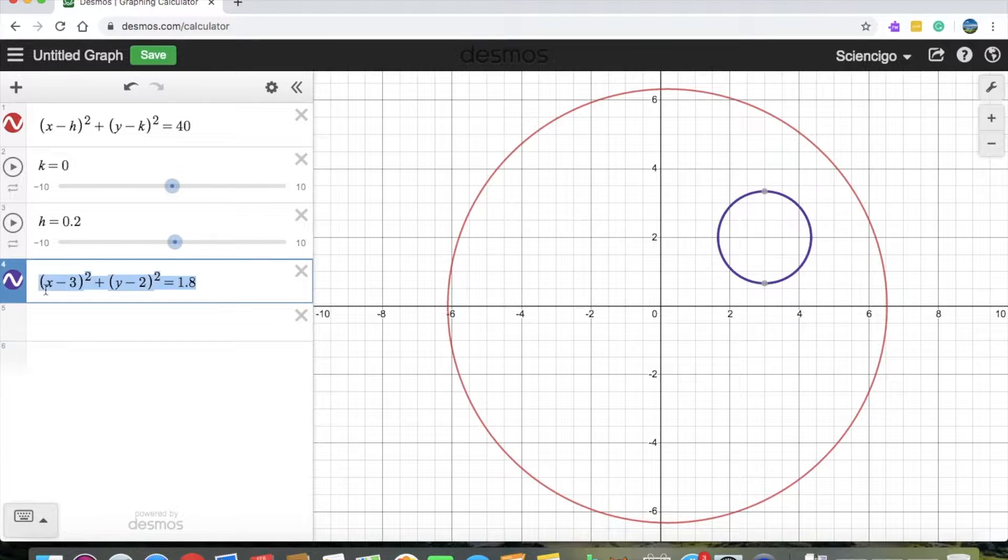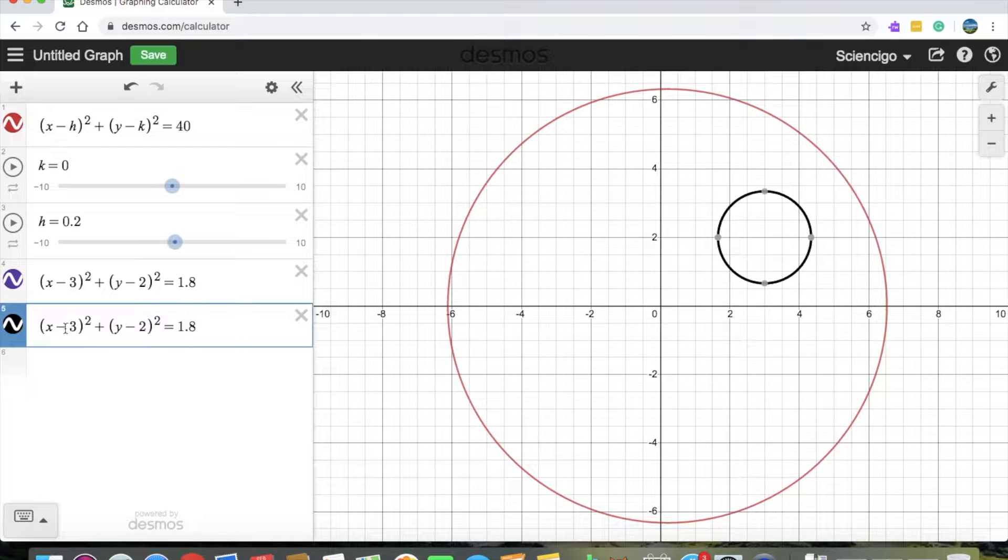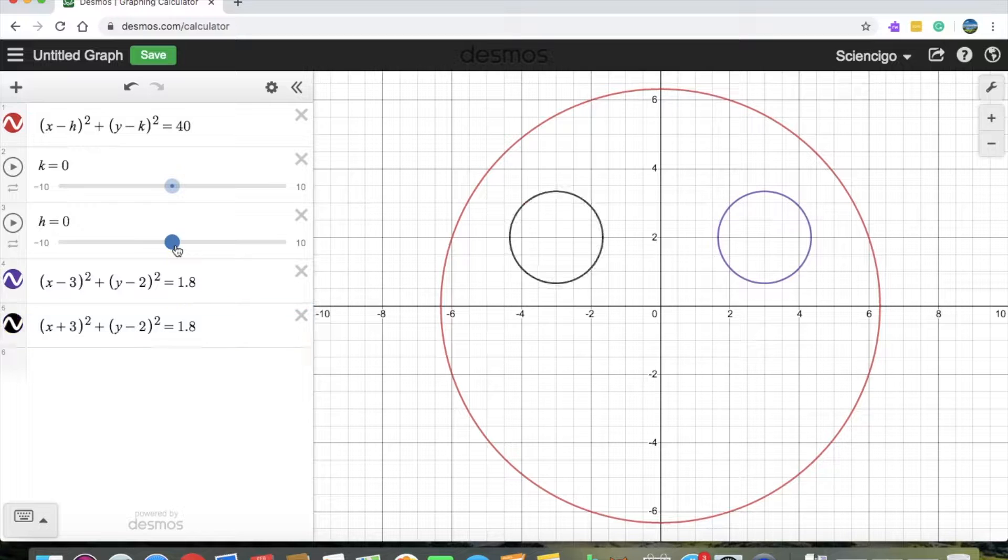Now we can do this for the other eye. We can copy this and paste this here. And all we have to do is change the negative sign into a positive one. So I was just thinking let's change this 0.2 to 0 because it's in the center.